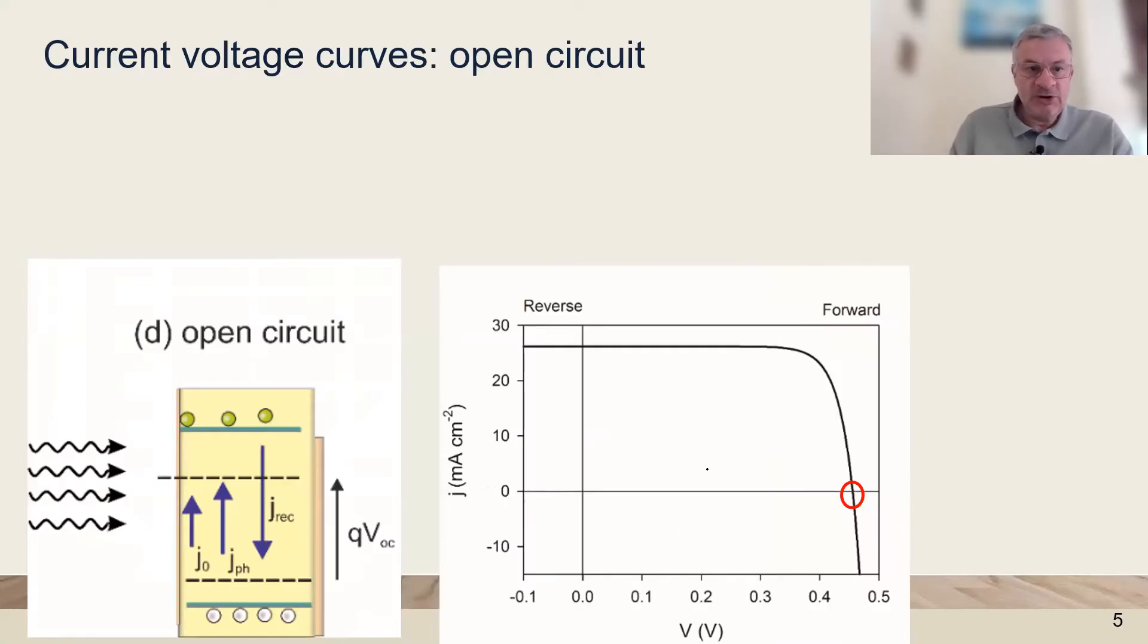At the open circuit point there is no current going out so that the internal currents, thermal generation, photocurrent and recombination are compensated.